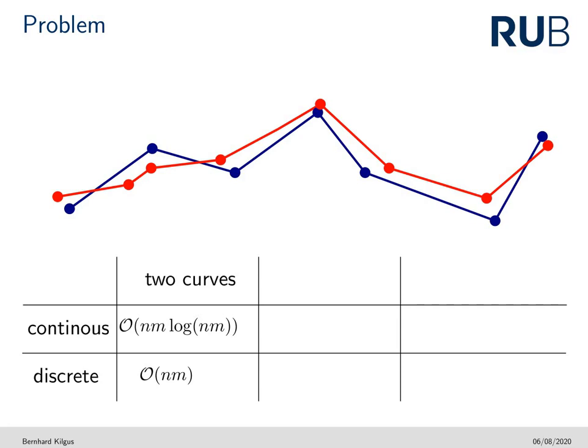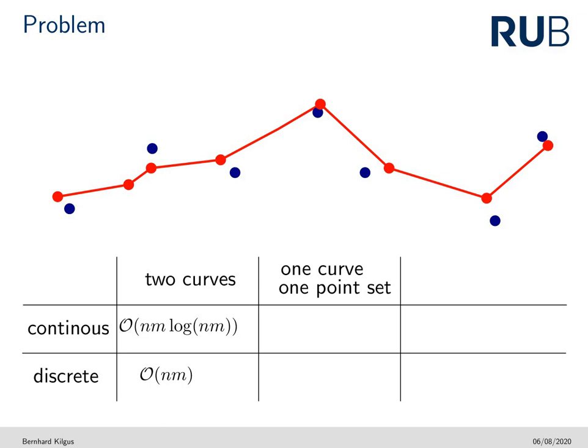A related problem considers a curve and one point set and asks whether the points can be connected such that the Fréchet distance or the discrete Fréchet distance between the resulting curve and p is at most a given value epsilon. Both the discrete and the continuous version of this problem have been shown to be NP-hard.